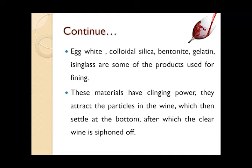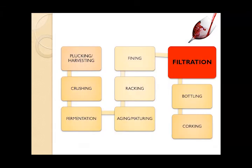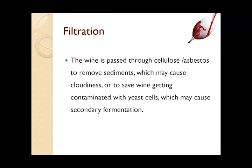These materials have fining power — they attract particles in the wine which settle at the bottom, after which the clear wine is piped off. In the oak wood barrels, the fining agent is added from the top, where it settles all the impurities present in the wine to the bottom, and hence the wine that is extracted is clear. After fining, there is filtration, in which the wine is passed through cellulose or asbestos to remove any sediments that make the wine cloudy and might cause a secondary fermentation later.